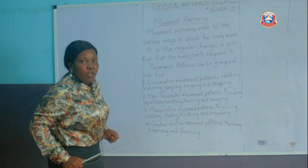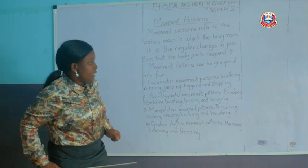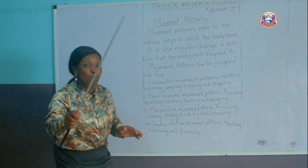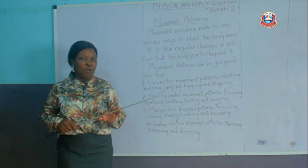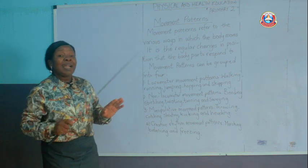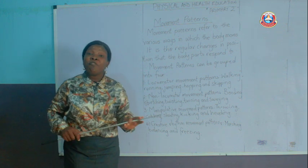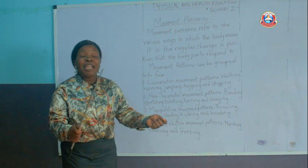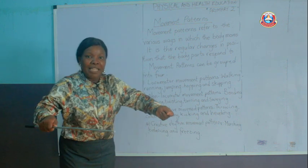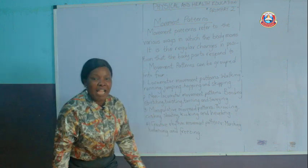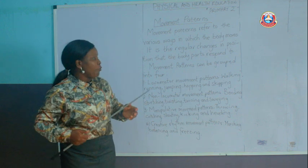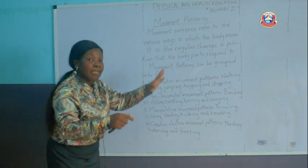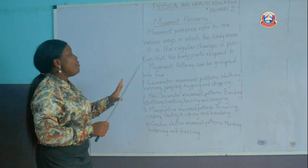Then we have hopping. You hop on one foot, raising one leg up. And there is another one — how many of you have seen a skipping rope? This is another kind of locomotive movement that involves moving your whole body. You take the rope over your head and lift your feet off the floor. These are the examples under locomotive movement patterns.